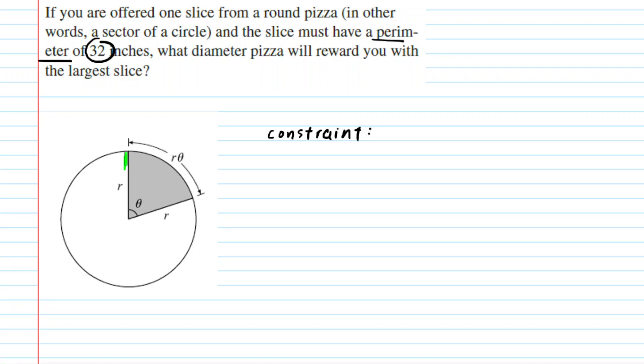Perimeter simply means that we have to add the lengths of the sides of the pizza. So this length here, this length here, and then the curved length of the slice of pizza. So we know that r plus r plus r theta must equal that constrained value of 32 inches.